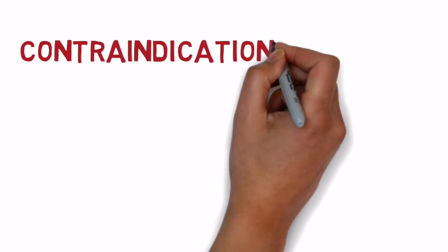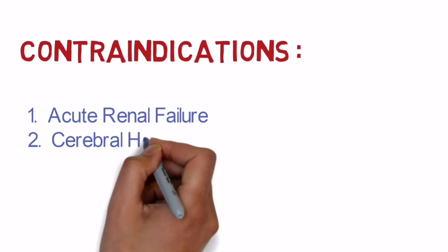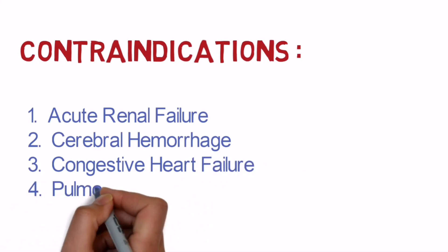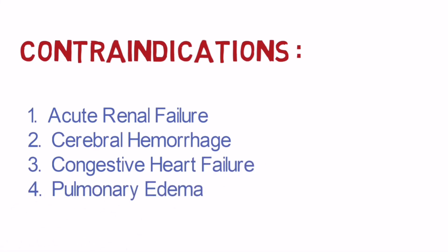Contraindications of mannitol include acute renal failure, cerebral hemorrhage, congestive heart failure, and pulmonary edema. Mannitol can be used in incipient renal failure but not in acute renal failure, because the kidneys cannot filter any blood and mannitol just causes increased fluid overload. In cerebral hemorrhage, mannitol crosses injured vessels and draws water into the brain substance instead of out, so it precipitates brain edema.